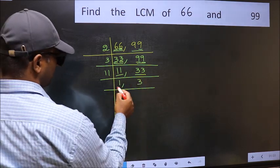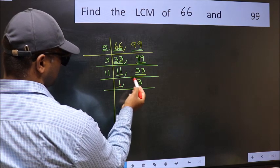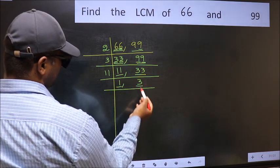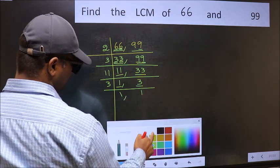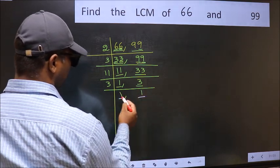Now we got 1 here. So focus on the next number 3. 3 is a prime number, so 3 ones 3. So we got 1 in both the places.